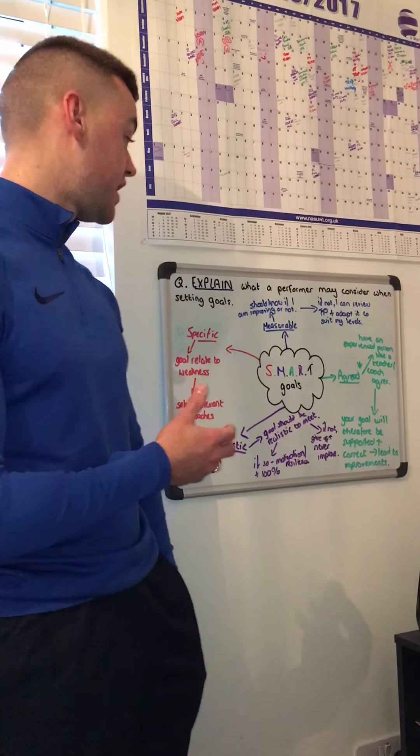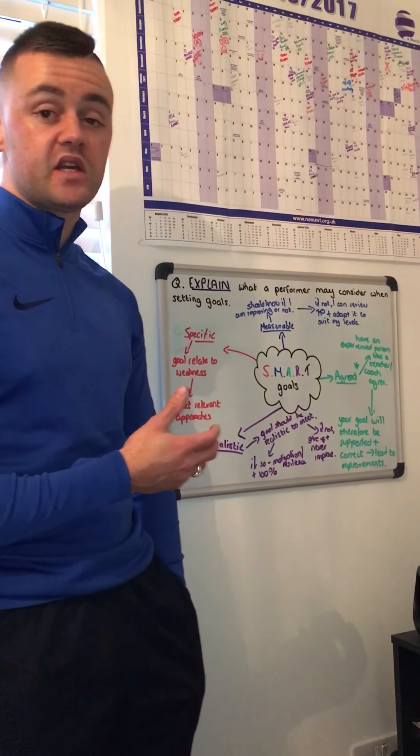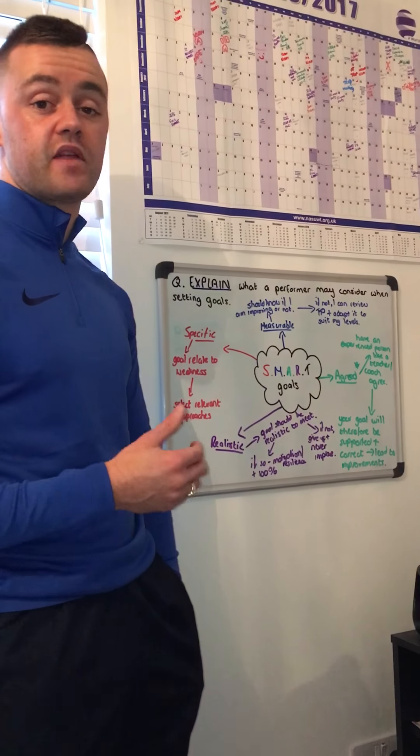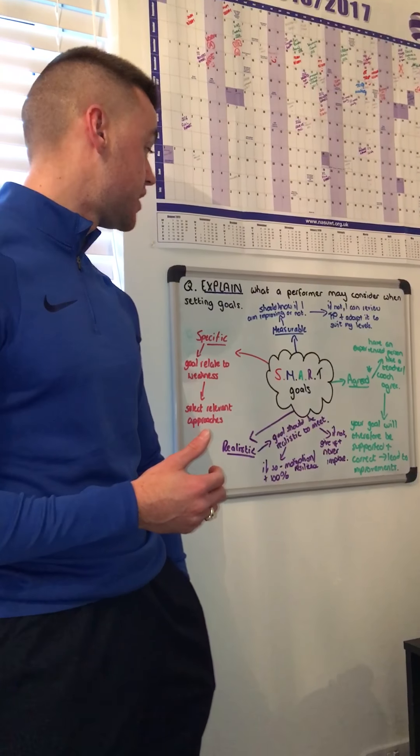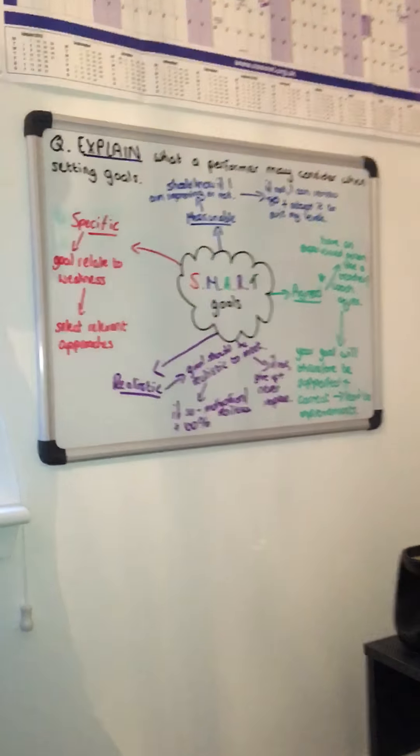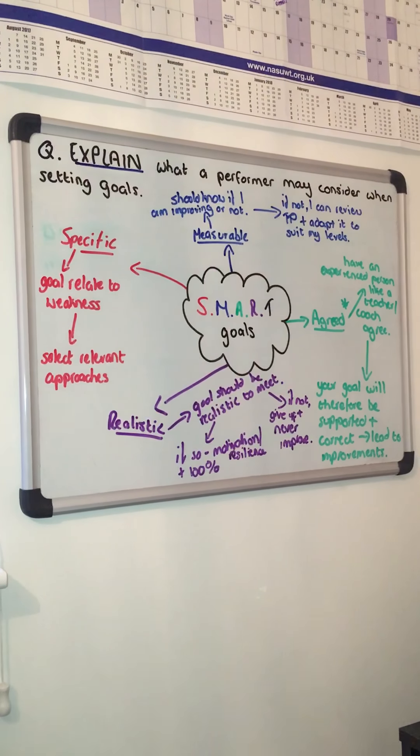Finally, we focus on the R — Realistic. Define it without achieving the mark: the goal should be realistic to me so that I can actually achieve it — realistic to your actual levels. By having a realistic goal, this can mean that my motivation and resilience levels will stay high and therefore I'll give 100% in good times and bad times to always improve. But if you want to really impress an examiner, you can build on the realistic point by flipping it — tell us what will happen if it wasn't realistic. However, if my goal was not realistic, this can lead to me losing heart, giving up, and therefore never improving.